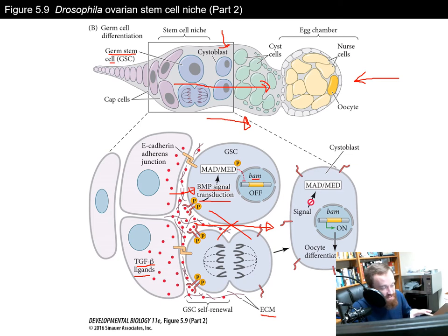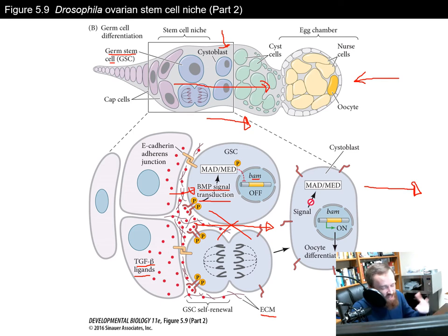As a cell divides and moves away from the cap cells, it will be further from TGF-beta — which prevents differentiation — and will experience a new microenvironment that allows it to differentiate via BAM transcription into an oocyte.